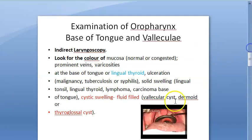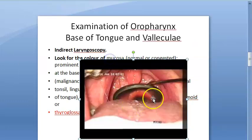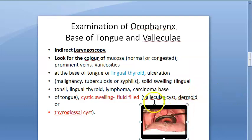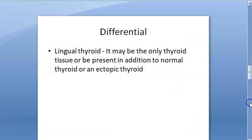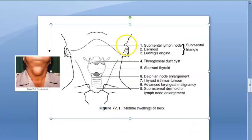You can also get a lingual thyroid — on indirect laryngoscopy, it can appear as a lingual thyroid. Vallecular cyst, dermoid, and thyroglossal cyst are also midline swellings. So remember to write all of these — thyroid cyst, lingual thyroid, and everything — in your exam answers.